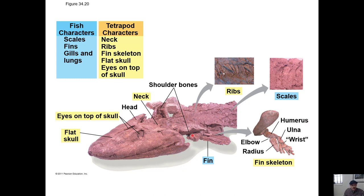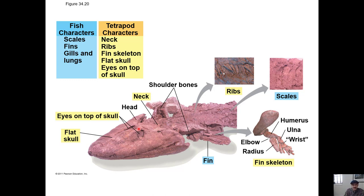Tiktaalik has fish-like ancestral characters — scales, fins, and both gills and lungs like some lungfish — but also tetrapod characters. 'Tetrapod' means four feet. It has a neck that can turn, ribs, a skeleton in the fin increasingly resembling a hand, a flat skull with eyes on top rather than on the sides. So it has traits of both fish and tetrapods, making it a transitional species from fish to amphibian.